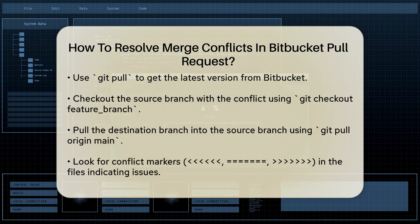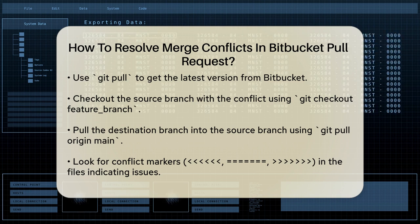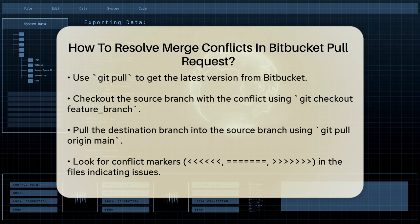Then check out the source branch that has the conflict. For instance, if your feature branch is named Feature Branch, you would use git checkout feature-branch. Now pull the destination branch into the source branch. If your destination branch is main, the command would be git pull origin main. This will try to merge the branches and reveal any conflicts.